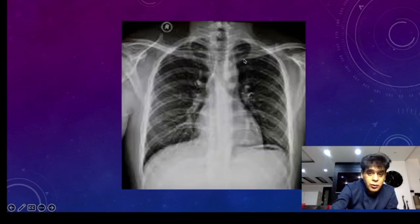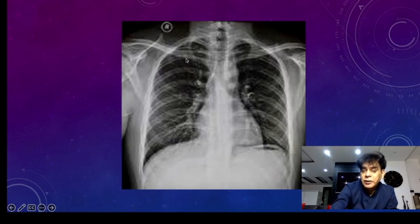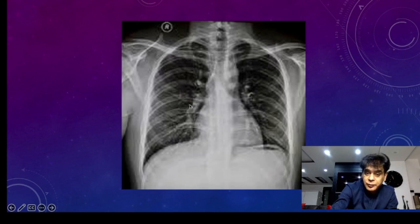Looking at the normal X-ray, you can see this black area — the trachea dividing into the two bronchi. But beyond this, within the lungs, the bronchial division cannot be seen. The reason is the black area of the alveoli, which are filled with air. So there is no contrast, and you cannot see the bronchi. You can see these bright areas, which are pulmonary vessels.